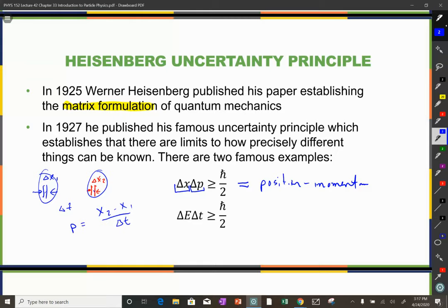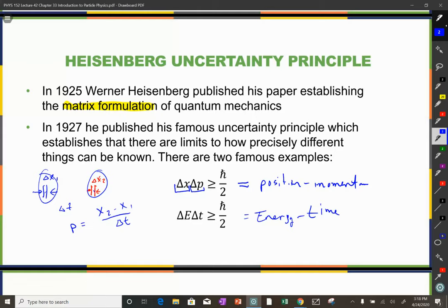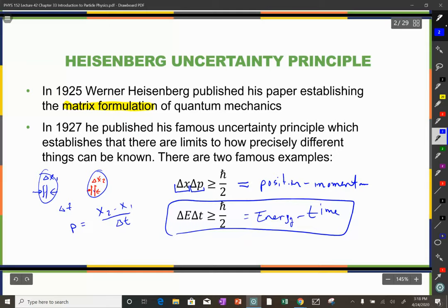The second uncertainty relation is the energy-time relation: your uncertainty in energy multiplied by your uncertainty in time is always greater than or equal to h-bar over 2. We use this in particle physics a lot, and we'll see it come back with a calculation coming up.